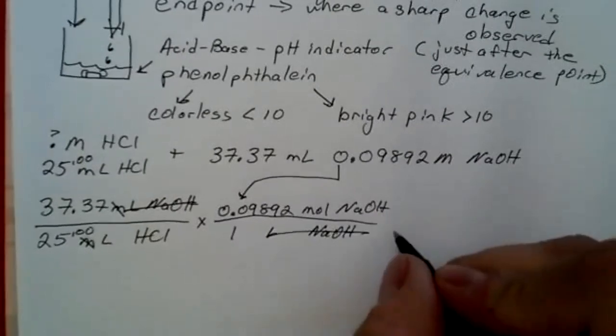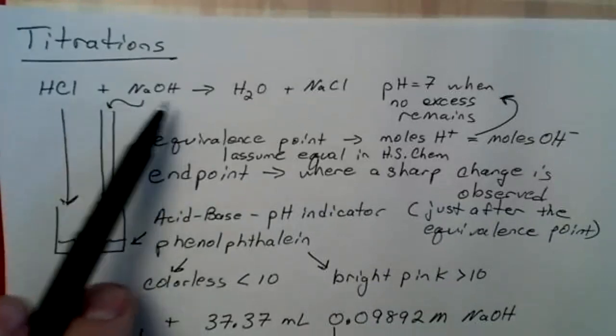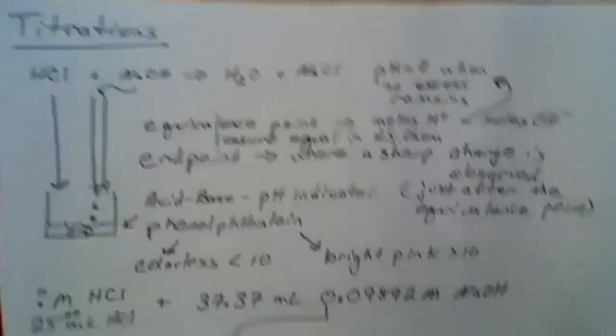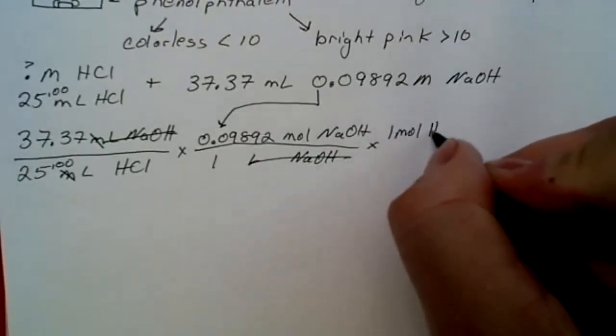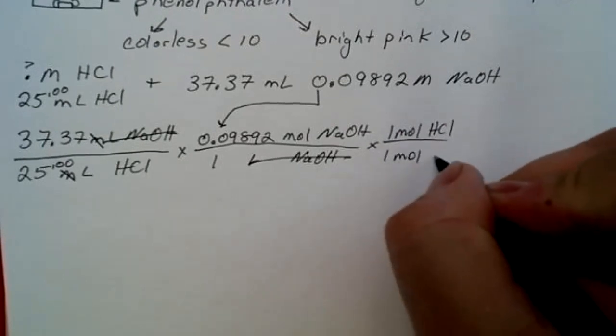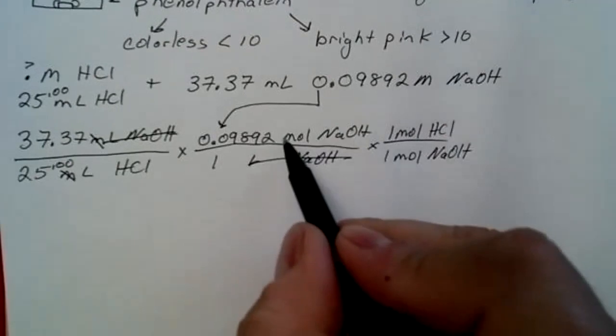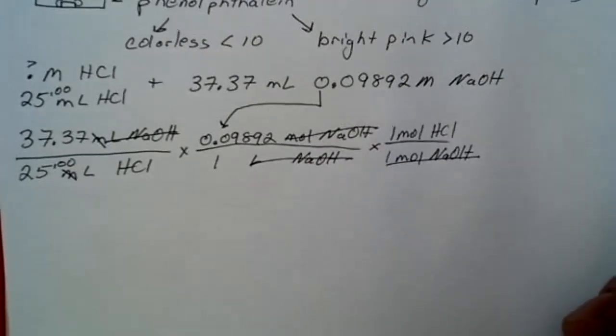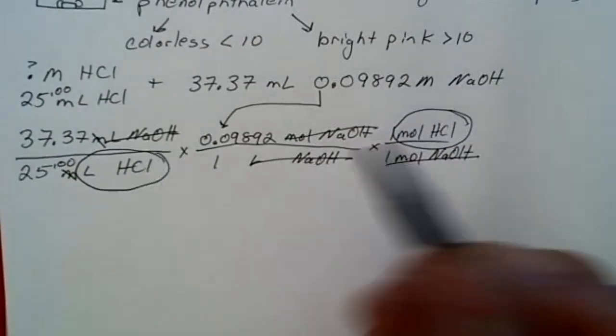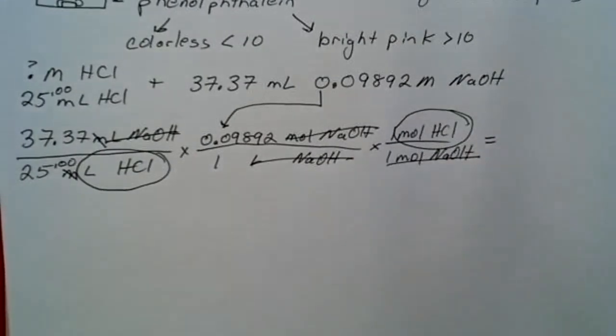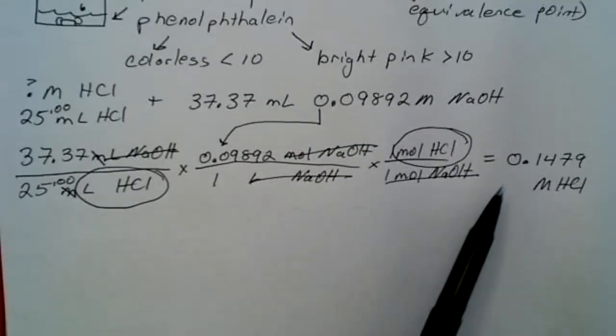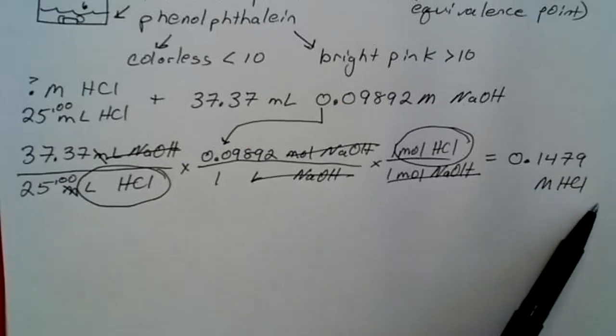Now I have moles of NaOH, and from my balanced reaction, remember I started this in the beginning, we were talking about how the proportions would react and it's a one-to-one in this reaction. So now one mole HCl for every one mole NaOH. My moles of NaOH cancel. What am I left with? I'm left with moles of HCl per liter of HCl solution. This is going to give me my molarity, and this would come out as 0.1479 molar HCl.